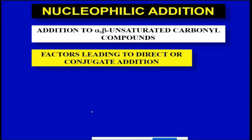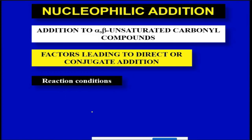Now, which factors determine whether direct addition or conjugate addition occurs? This system is called alpha-beta unsaturated carbonyl compounds, which is very different from dienes. Because there is an oxygen present, there will be a few differences when we explain these examples. The basic factors can be similar: the first factor, as studied for dienes, is reaction conditions. Lower temperature usually leads to direct addition, while higher temperature favors conjugate addition.